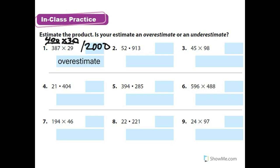On number 2, I'm going to round 52 down to 50, and round 913 down to 900. So 5 times 9 is 45 with 3 zeros: 45,000. And this is an underestimate.